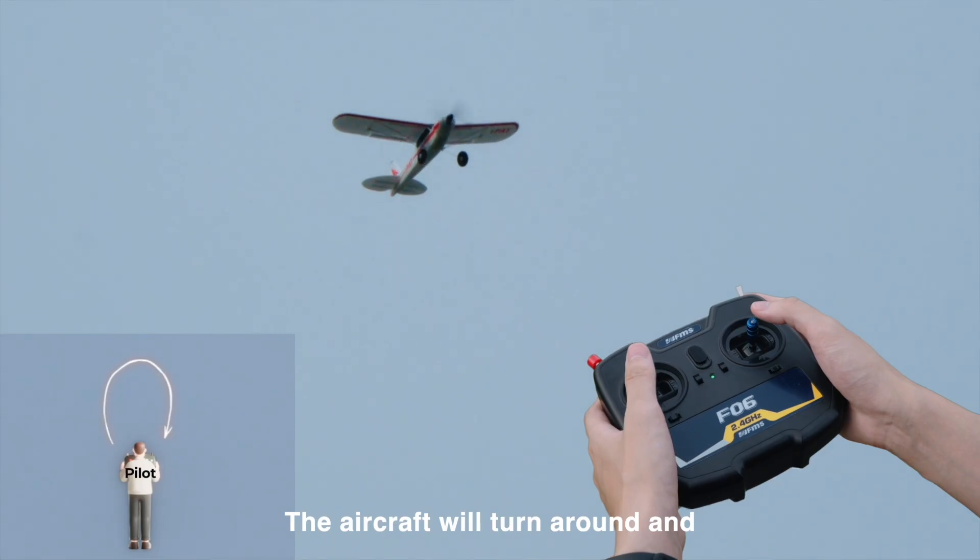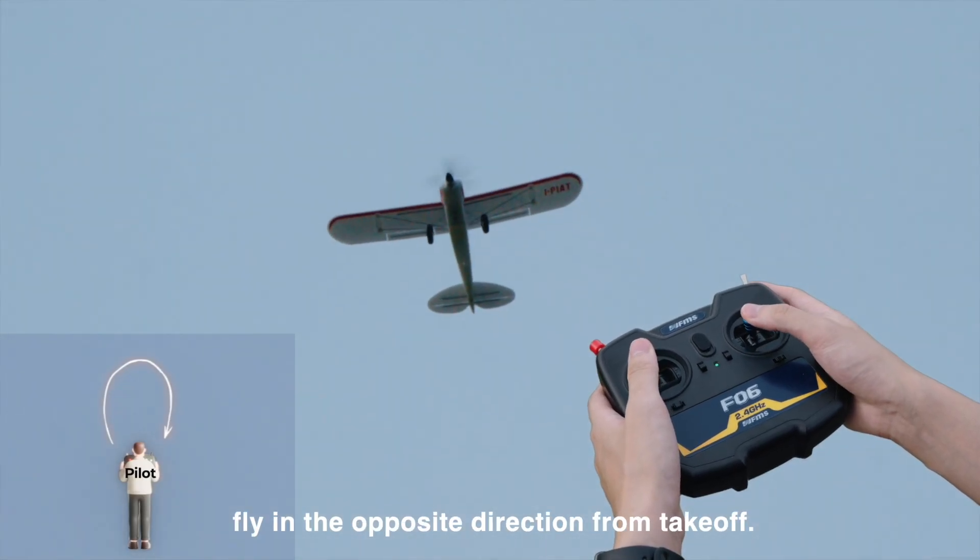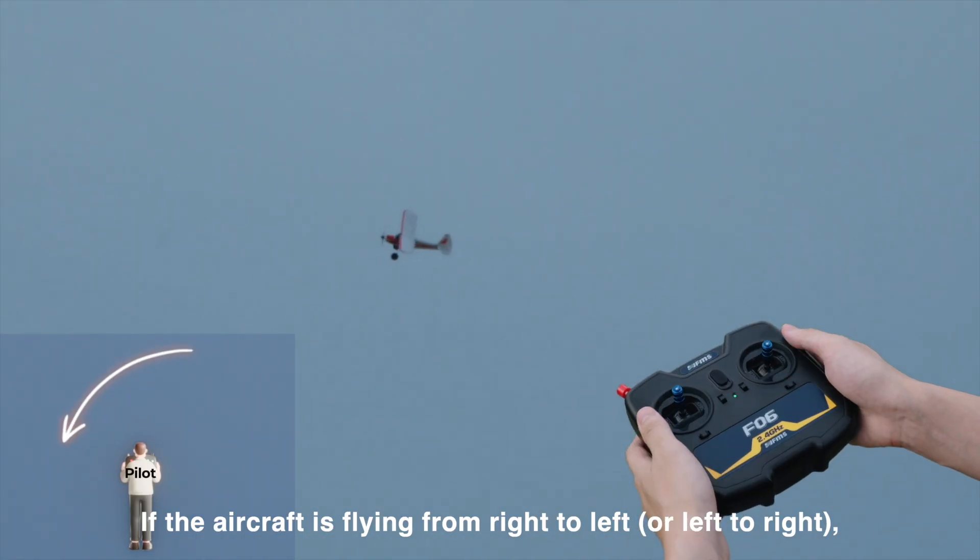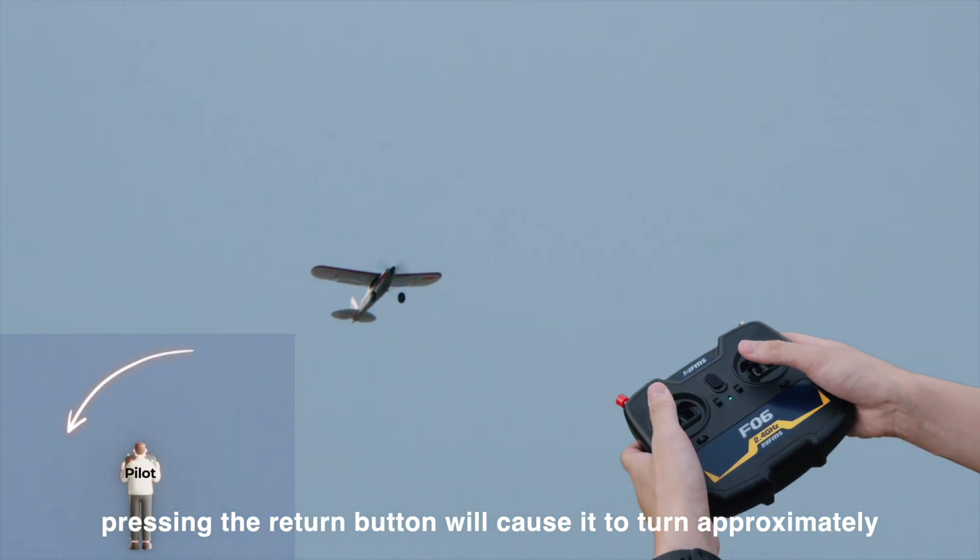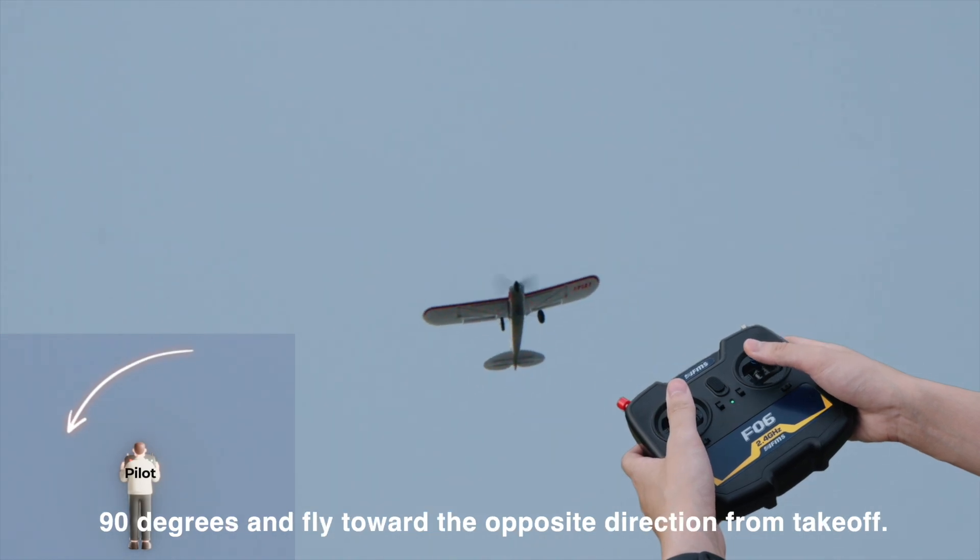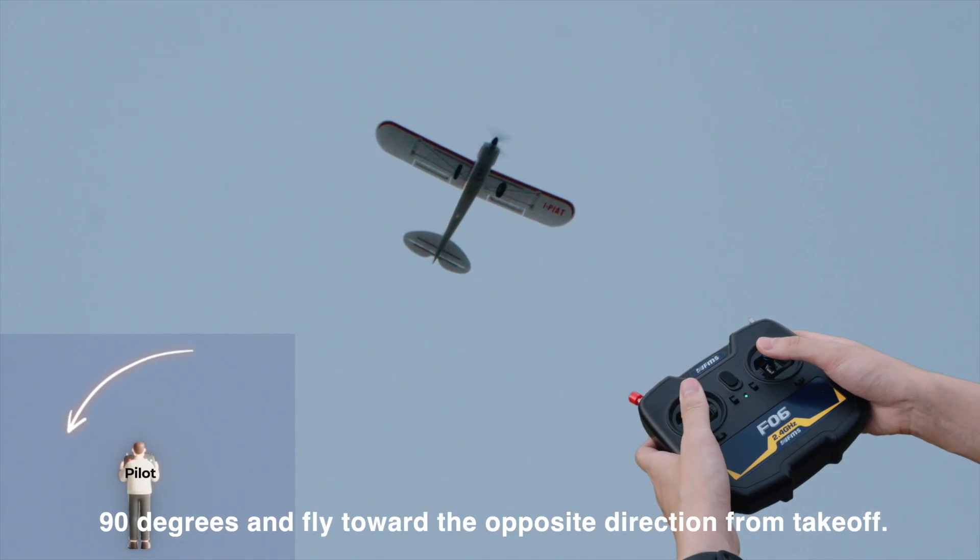The aircraft will turn around and fly in the opposite direction from takeoff. If the aircraft is flying from right to left or left to right, pressing the Return button will cause it to turn approximately 90 degrees and fly toward the opposite direction from takeoff.